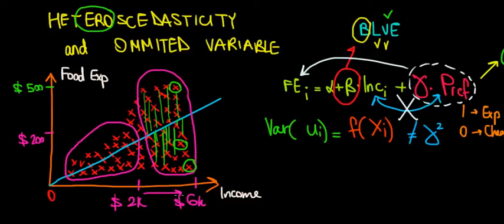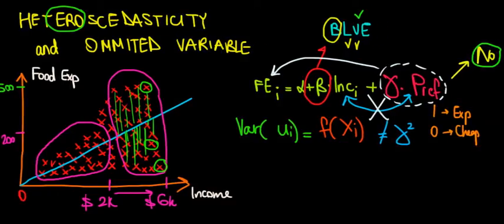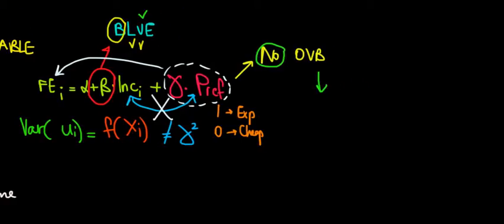So in that case, our estimate would become BLUE again. That's the idea. Heteroscedasticity, yes, but no OVB. It's unbiased, but we might have a better estimate if we take into account what we're missing. Hope this all makes sense, and we're done.